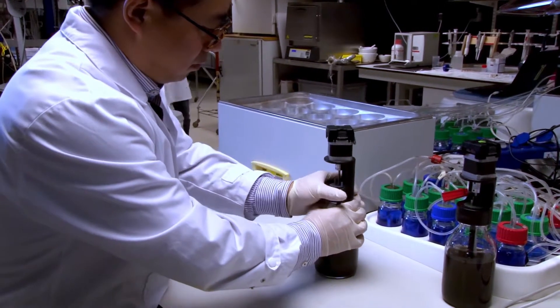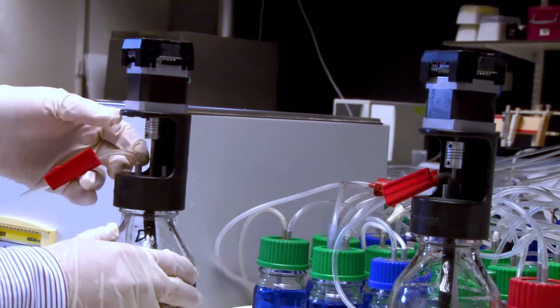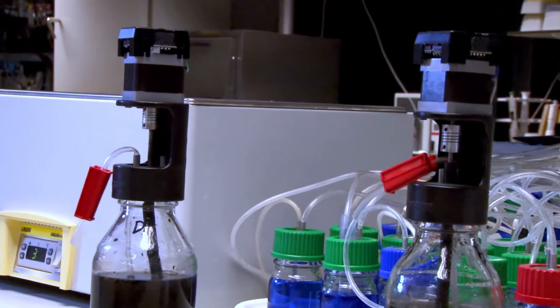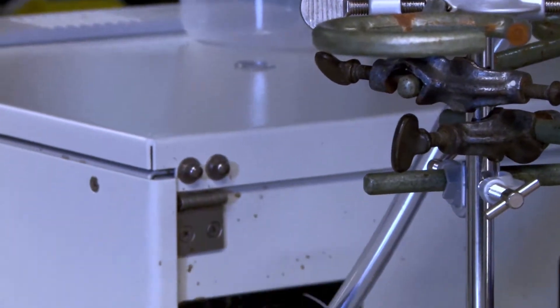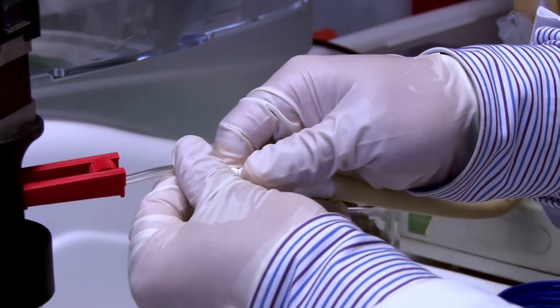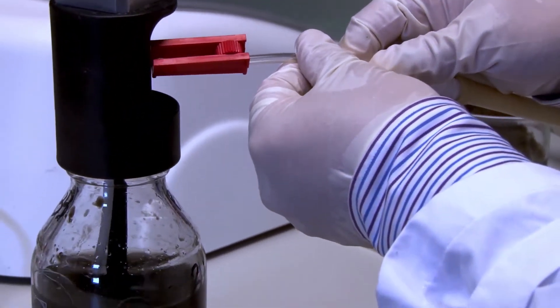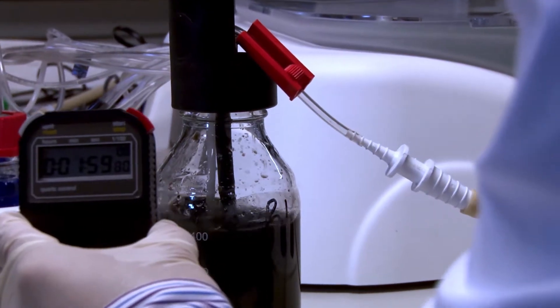To achieve anaerobic conditions, using the extra inlet at the lid of the bottle, flush for two minutes all of the bottles with the gas, composed of a mixture of nitrogen gas and carbon dioxide. Close the red valve.